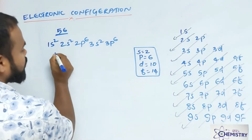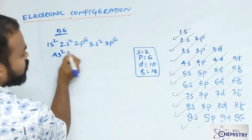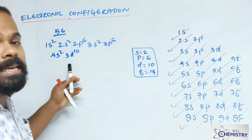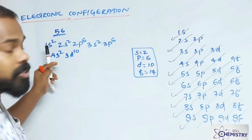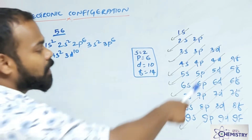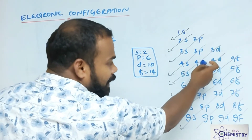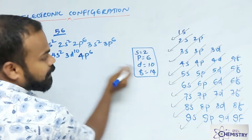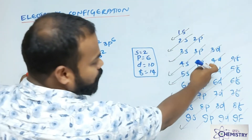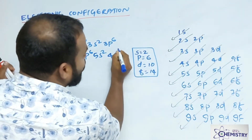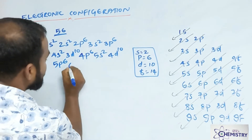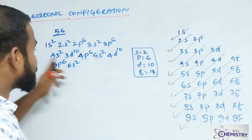After 3p⁶ we are gone along with this line — not 3d yet. After 3p⁶ comes 4s², then 3d¹⁰. Keep in mind: if you reach 3d, then 30 electrons are covered. Count: 4, 10, 12, 18, 20 plus 10 = 30. Then comes 4p⁶, then 5s², then 4d¹⁰, then 5p⁶, then 6s².